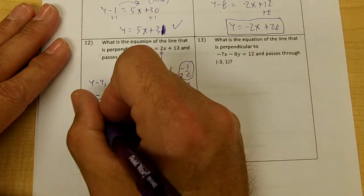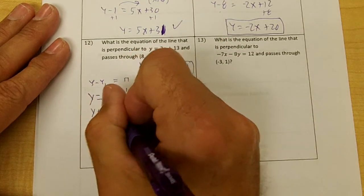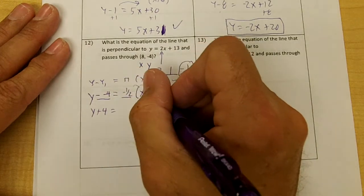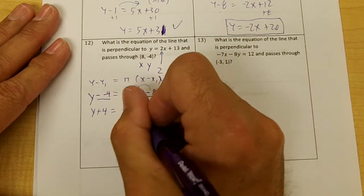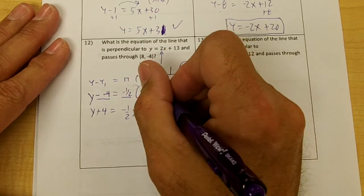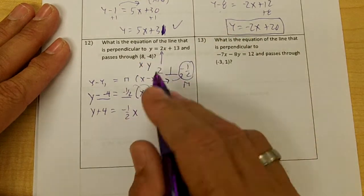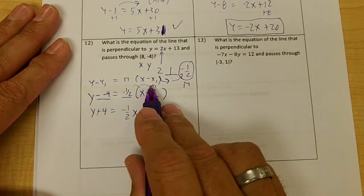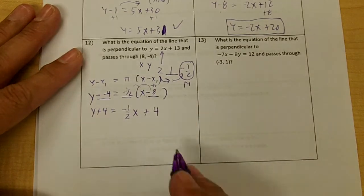So the two negatives here are going to turn into a positive. The negative 1 half you're going to distribute—you'll get negative 1 half x, and then negative 1 half times negative 8 is a positive 4. Half of 8 is 4, and I have two negatives, so it turns into a positive.